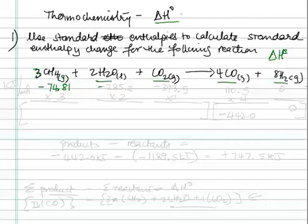For water, the liquid state is -285.8. For carbon dioxide, it's -393.5. For carbon monoxide, it's -110.5. And for hydrogen, it's going to be zero because it's an elemental state.